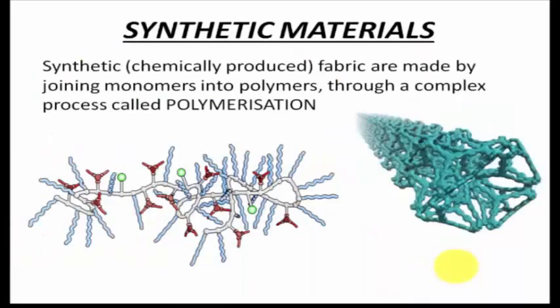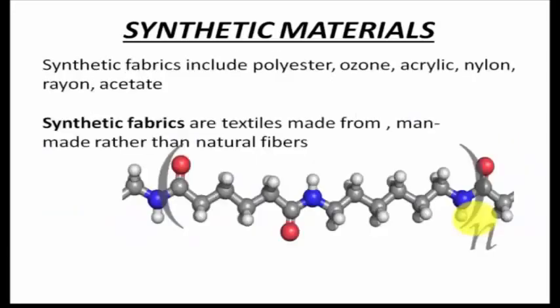Synthetic fibers are fibers made by joining monomers into polymers through a complex process known as polymerization. In polymerization, monomers are combined together to become polymers — it's a chain of monomers. The process requires very small molecules that combine chemically to form a polymer chain or a 3D network of polymer. Examples of synthetic materials include polyester, acrylic, nylon, rayon, and acetate.